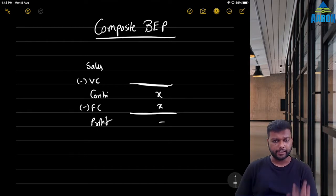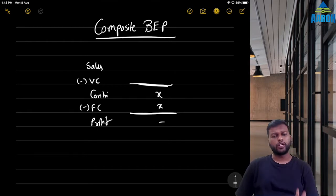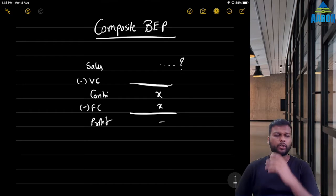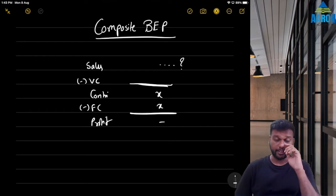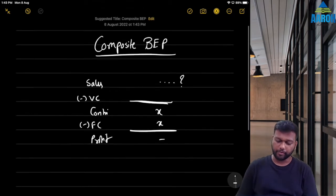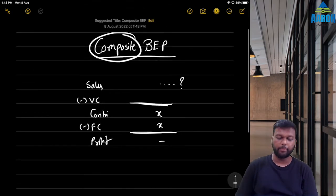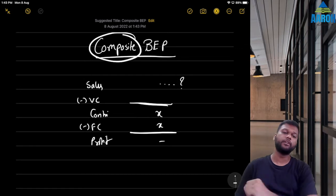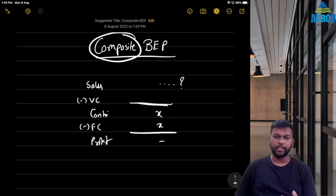When profit is zero, contribution and fixed cost are equal — that's the break-even point, and the sales at that point are break-even sales. But in this lecture we are not focusing on that; we have to focus on composite BEP — that is, what to do when there are two or more products.